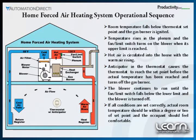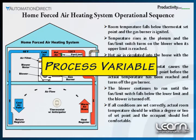Closed loop typically means we have some form of feedback that is used to indicate the desired results are being produced. In heating our home, we use the thermostat to measure the current room temperature, which we can also call our process variable.